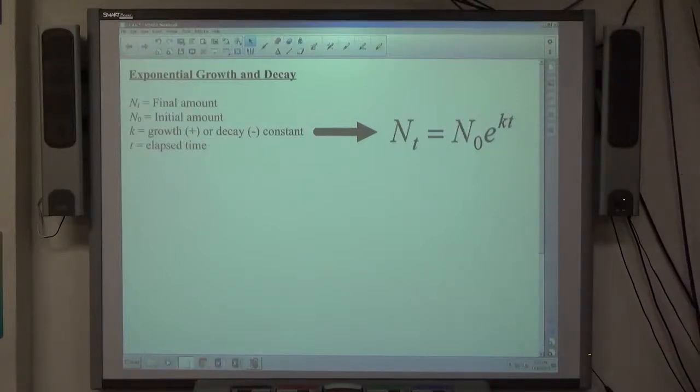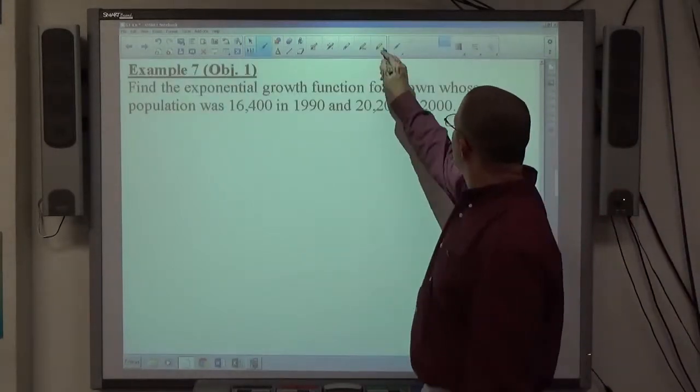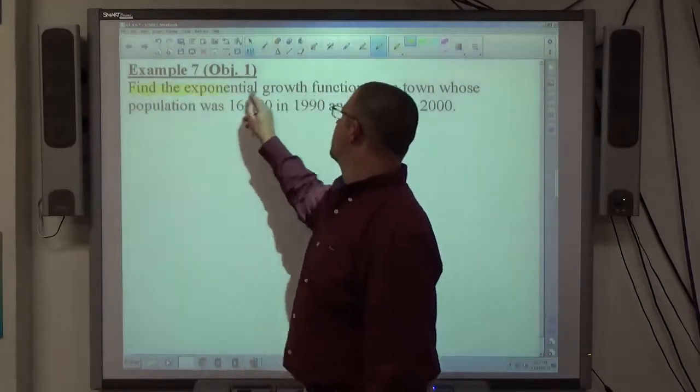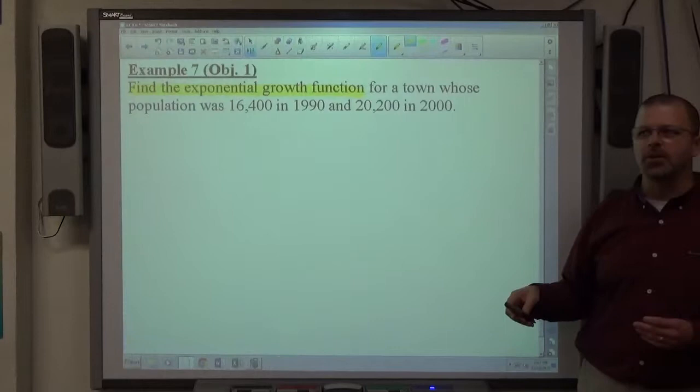Example 7 involves the exponential growth and decay function, which is here. It's pretty obvious to use that because it says find the exponential growth function. It's called the exponential growth function, so that should let you know that we're probably going to use that thing.